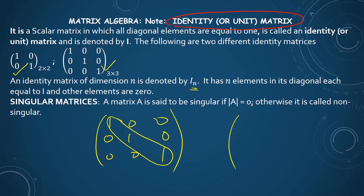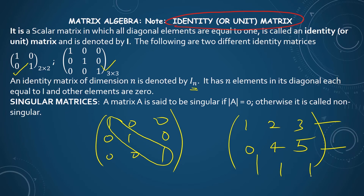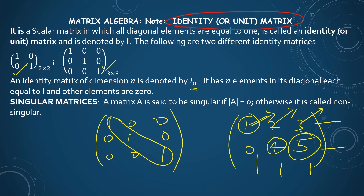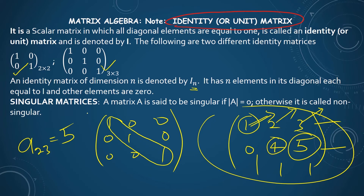Now, somebody can answer this question here. This has 2 rows and 3 columns, so the dimension of this matrix is 2×3. If you are asked to find A(1,1), the element occupying the first row and first column is 1. First row, second column is 2. First row, third column is 3. Second row, first column is 0. Second row, second column is 4. Second row, third column is 5. So A(2,3) equals 5. This matrix is a 2×3 matrix because it has 2 rows and 3 columns.